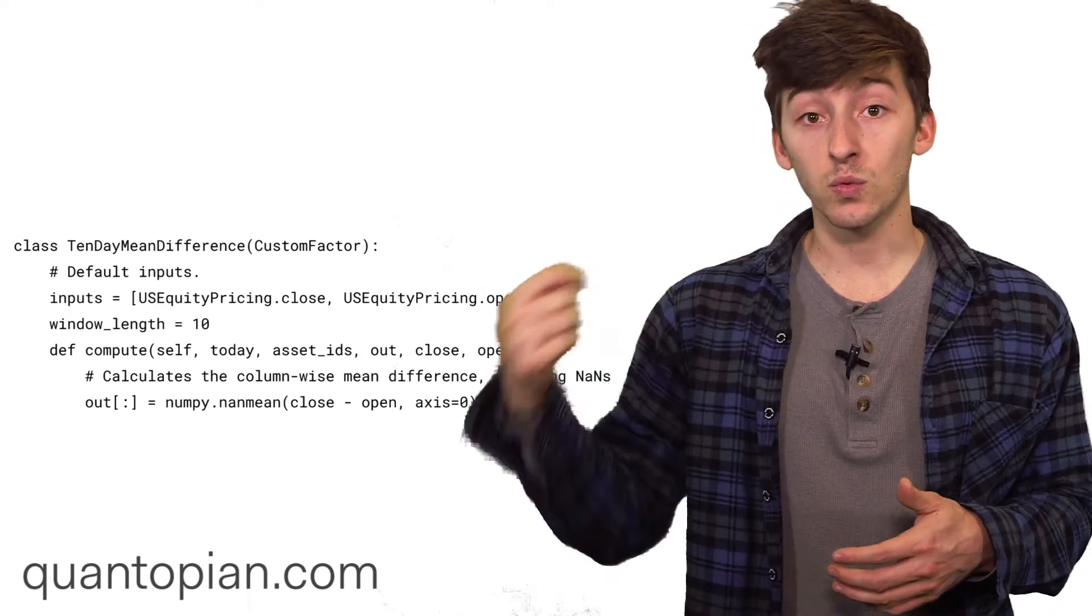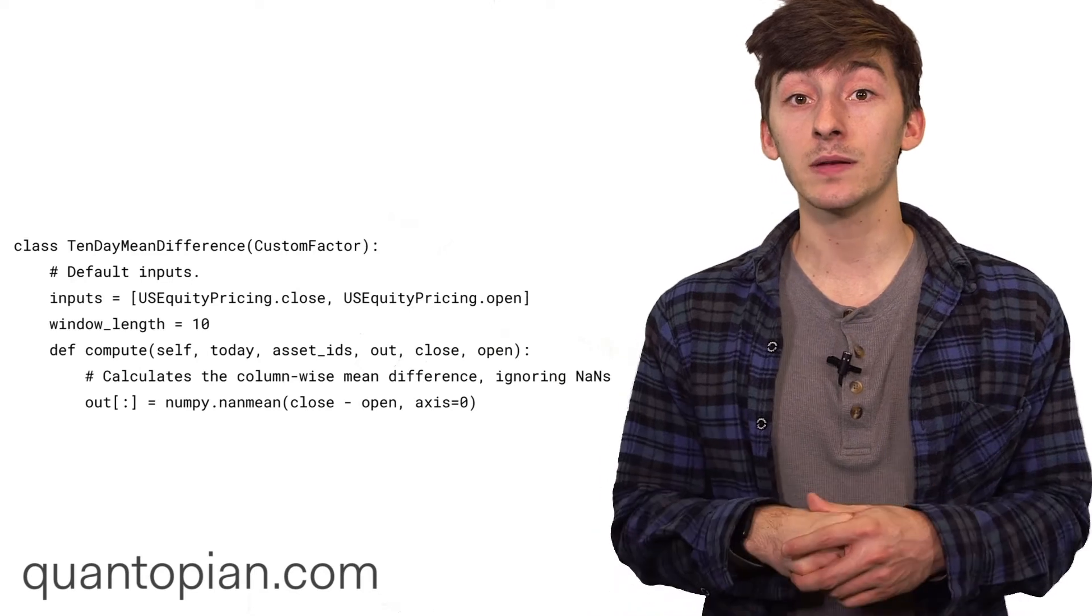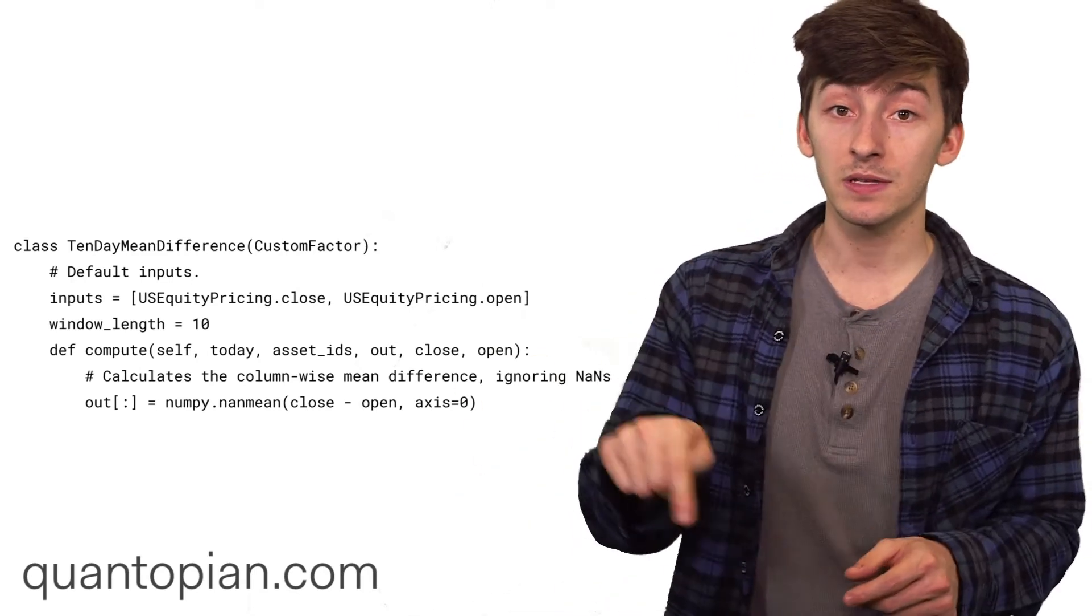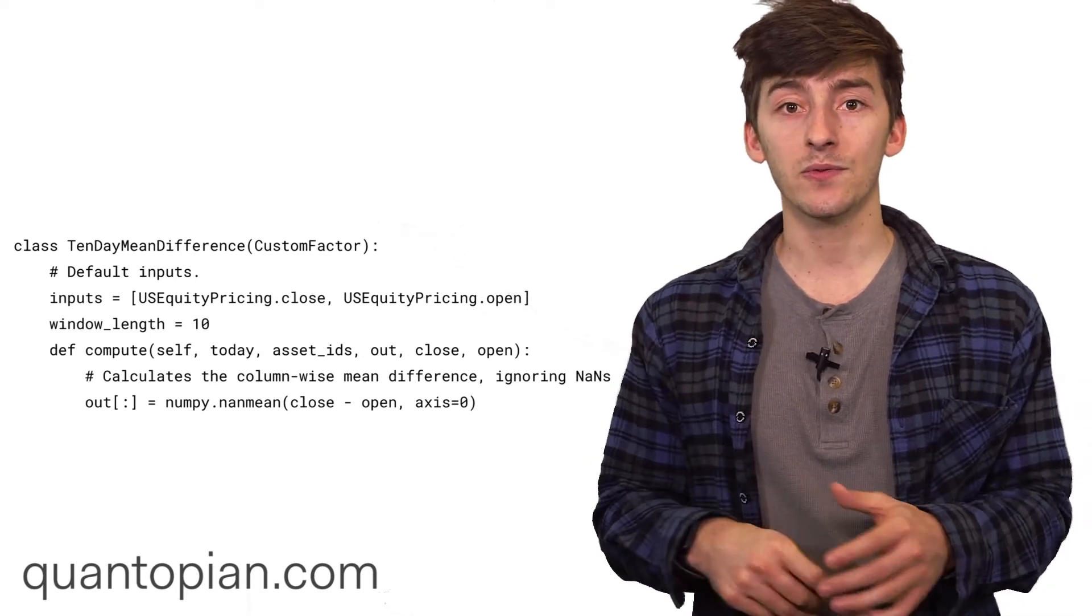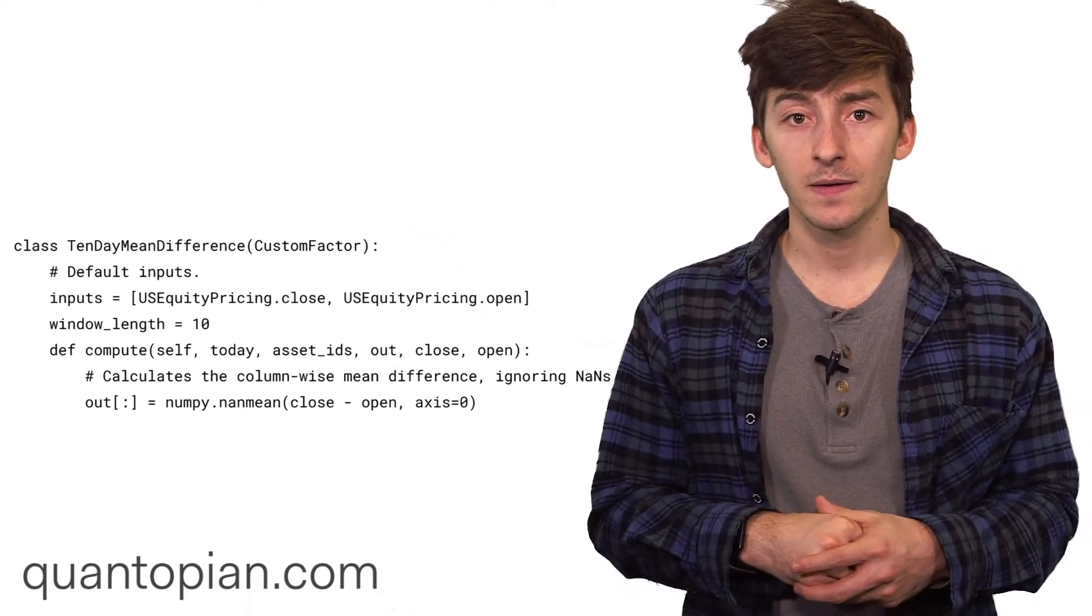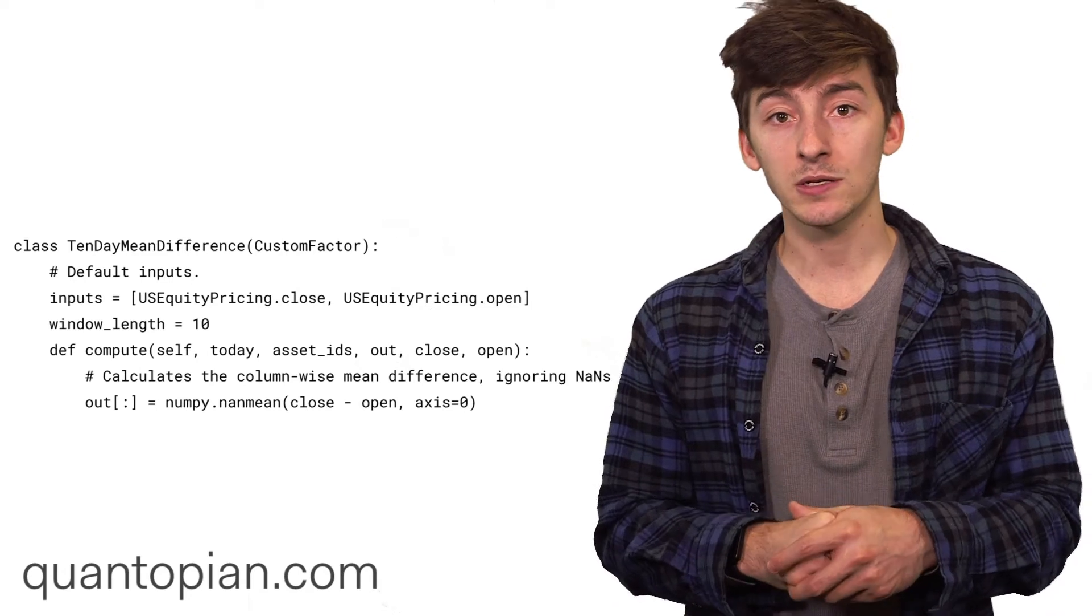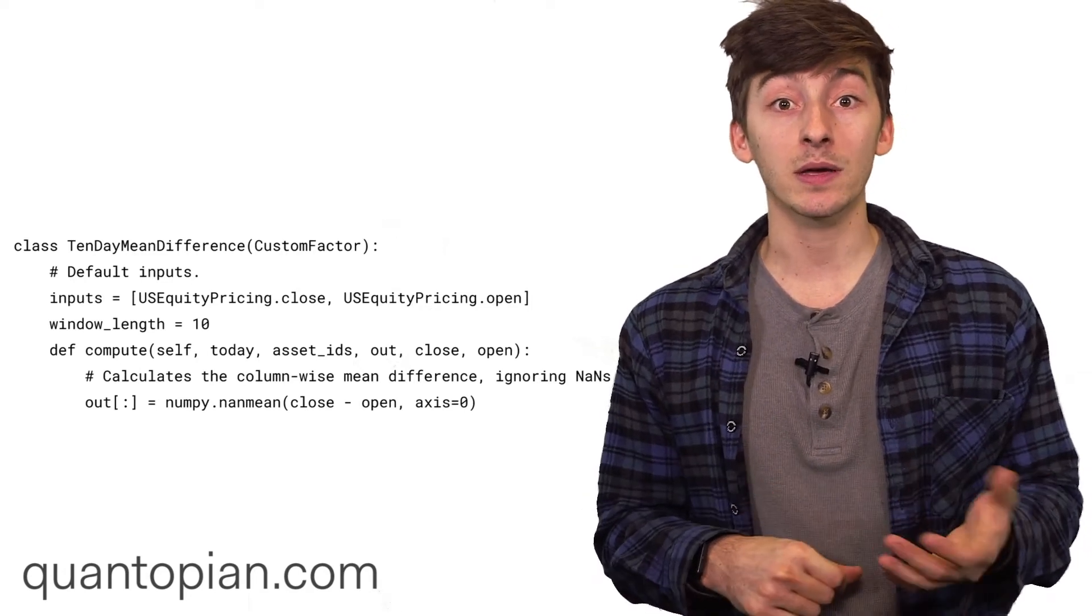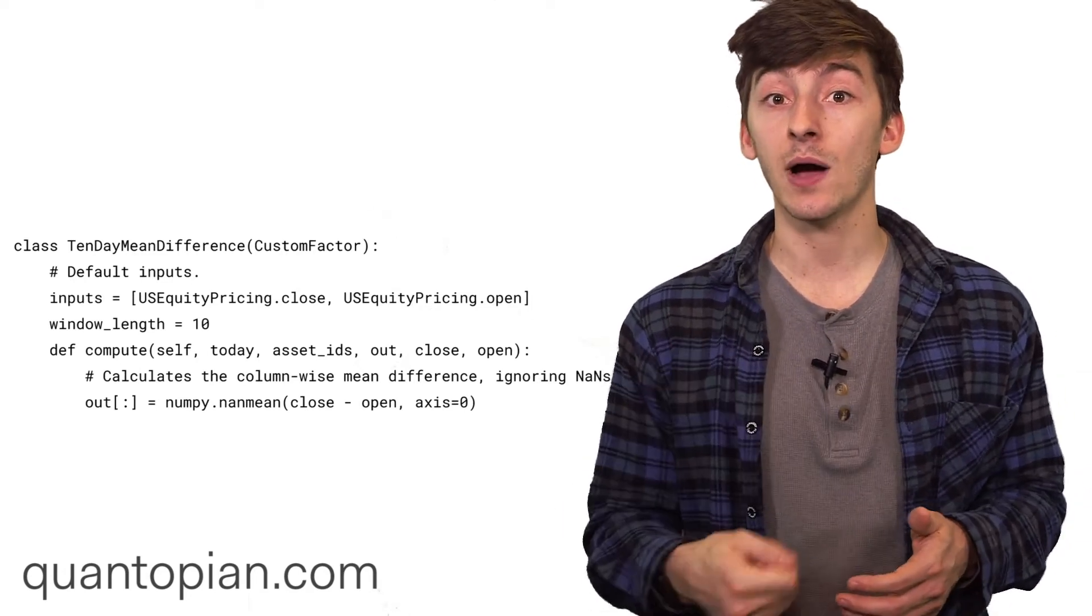When you're actually running this custom factor through a pipeline, what pipeline does is it runs and fetches the inputs and feeds them into the compute function through those parameters in the form of NumPy arrays. Then you can express whatever computation that you want using NumPy code and then write it to the out array.